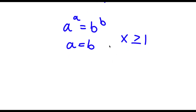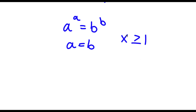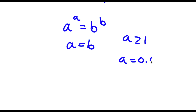Let's say a was a decimal, like 0.4. Then this property wouldn't apply because a has to be greater than or equal to 1. So if a was 0.4, this property wouldn't work out because a is not greater than or equal to 1.